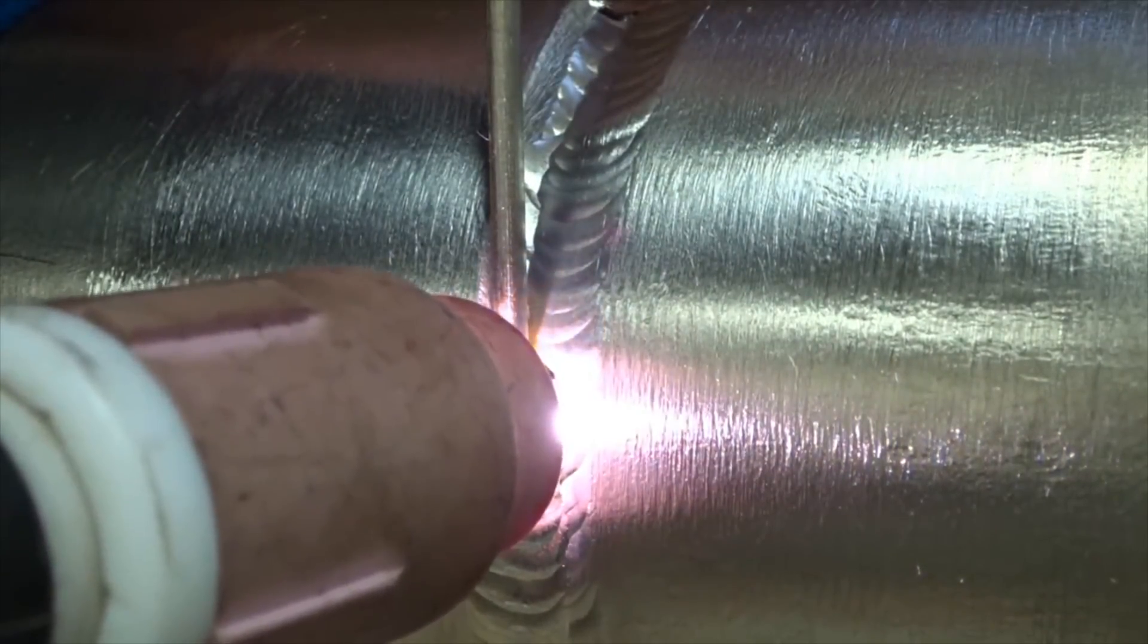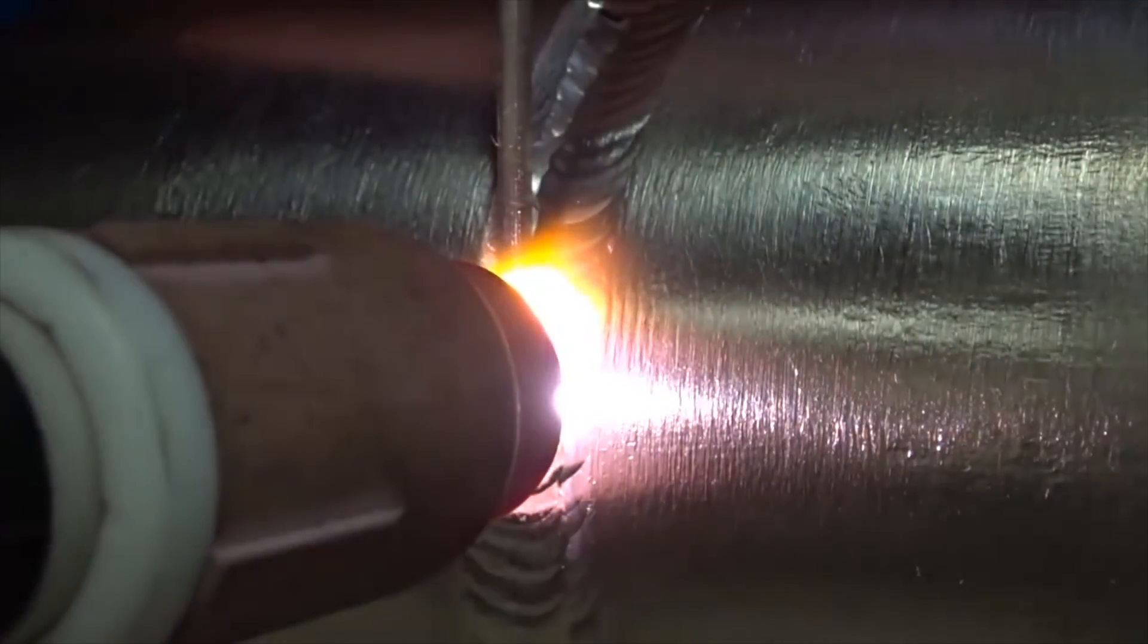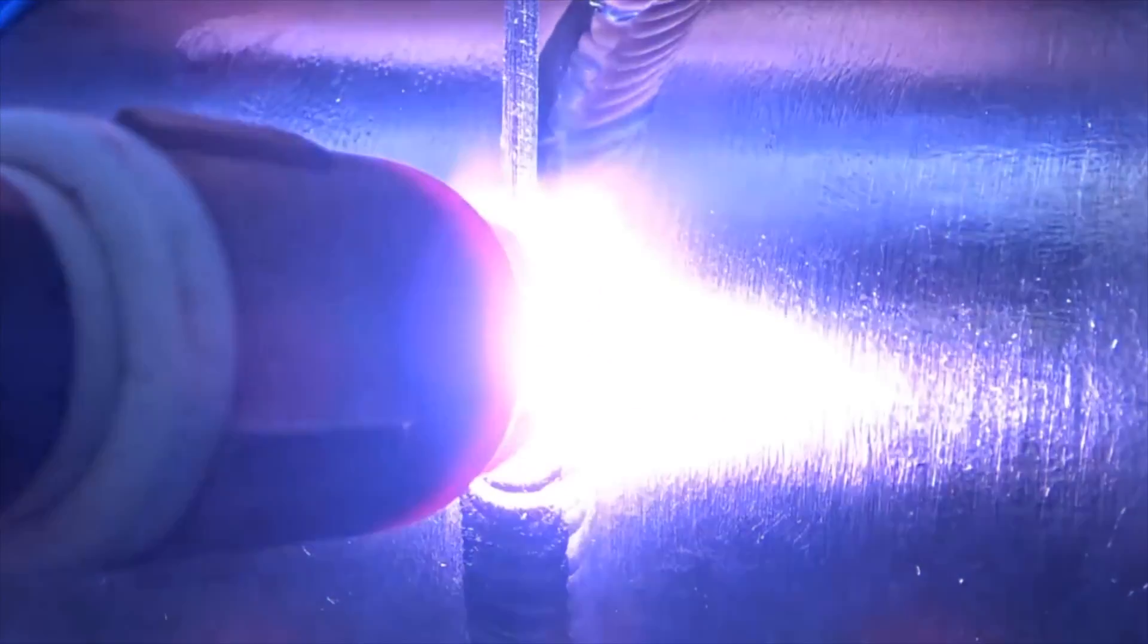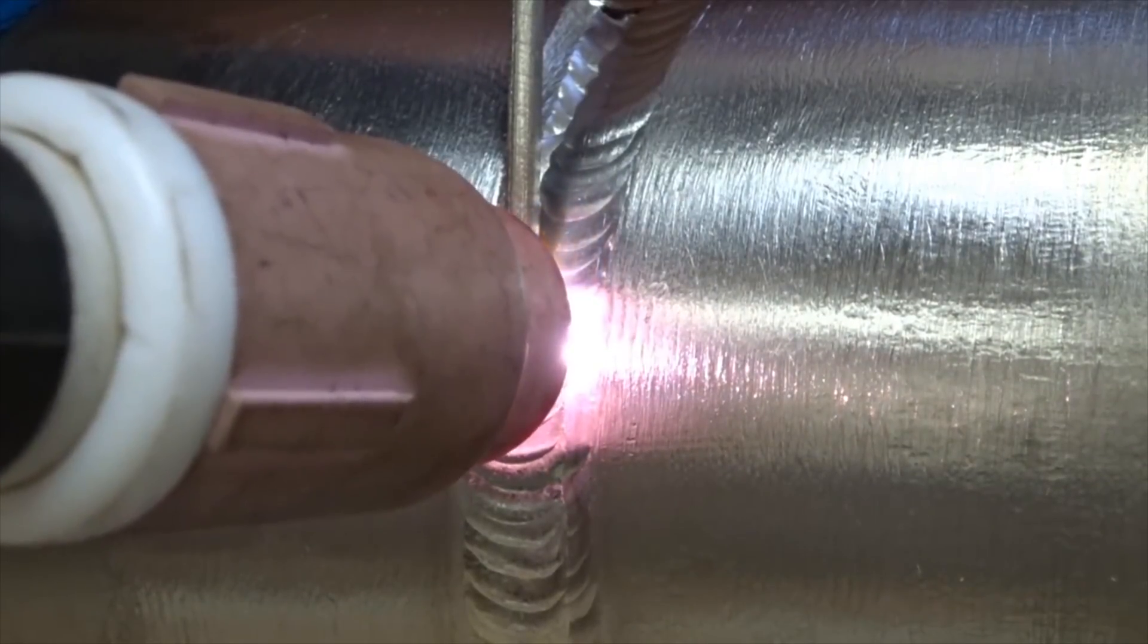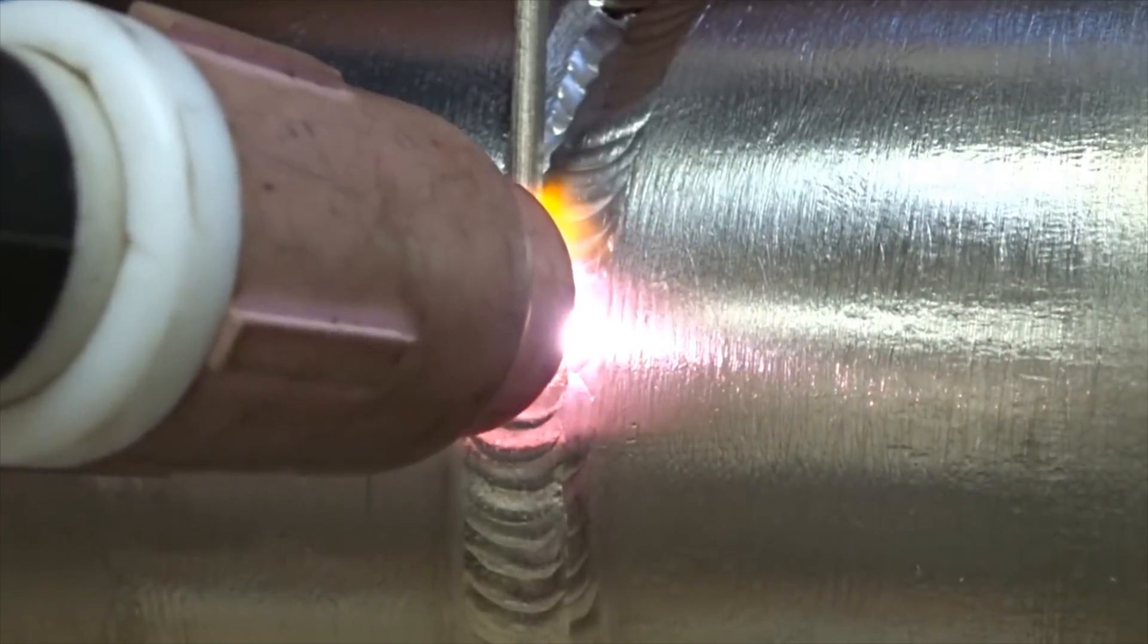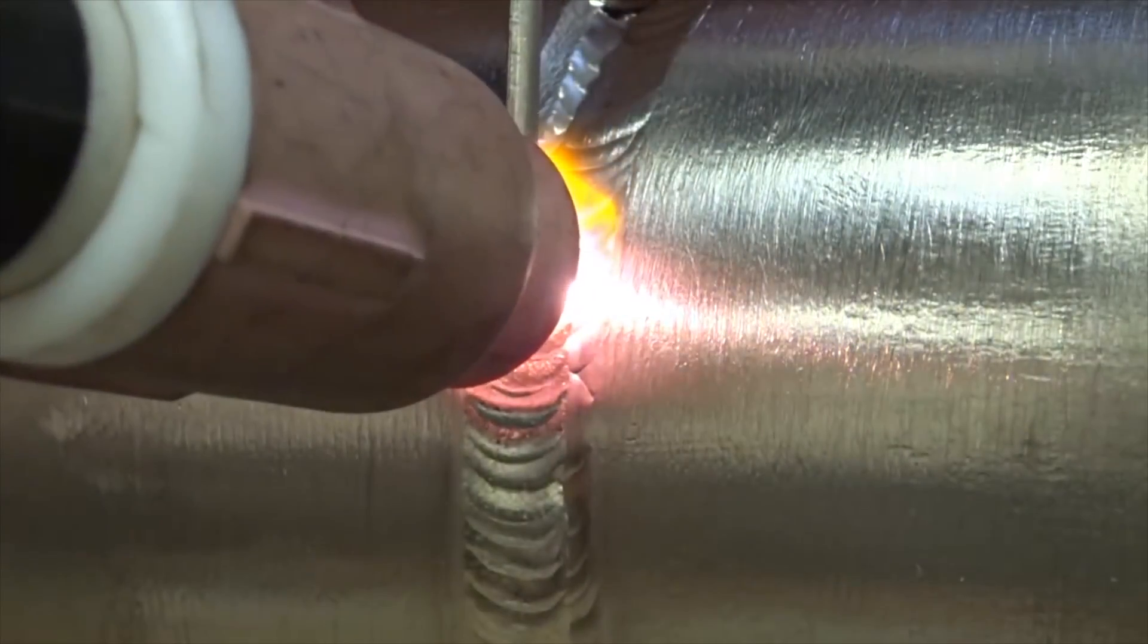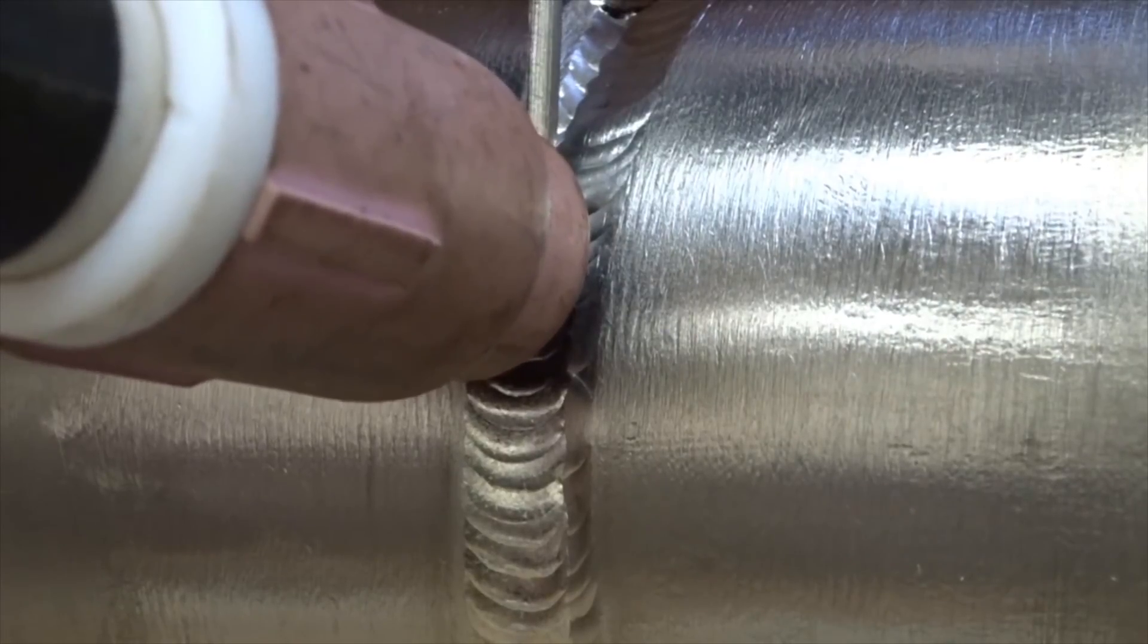In real time he's maybe covering three-eighths of an inch linear distance where he does this fill pass. The colors are absolutely mint. He's proven you can weld titanium without a purge chamber and still get the right colors. If I had more time and opportunity to work on titanium more often, I could probably even braze titanium outside of a purge chamber fairly successfully.